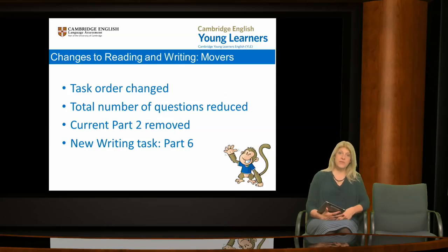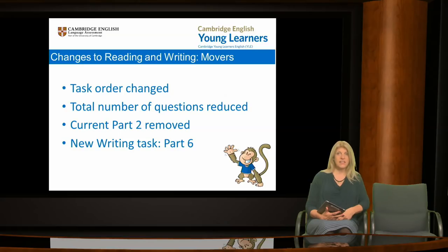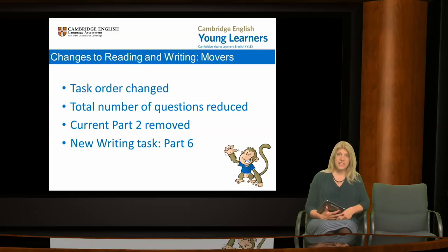Moving on to movers reading and writing, a number of changes have been made to this paper. The task order has been changed so that easier tasks, as identified in our research, appear at the beginning of the test. The number of questions has been reduced from 40 to 35. The biggest change, though, is that a new Part 6 will replace the current Part 2. Let's look at a sample of this task to see what's involved and how it's assessed, before thinking about activities you could do in class.